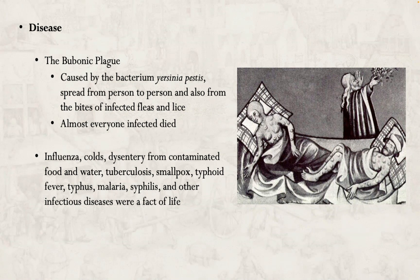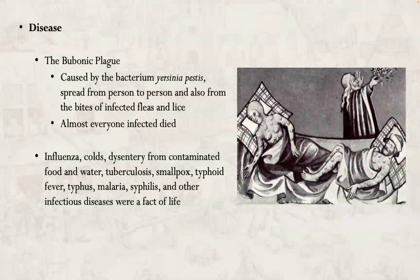Disease was a fact of everyday life in Elizabethan England. Of course there was still the bubonic plague, caused by the bacterium Yersinia pestis — they didn't know that at the time, but we know it today. It was spread from person to person and could also be spread through the bites of infected fleas and lice. There has been some recent research suggesting that rats were not as involved as initially thought, though the common belief was that rats carried the fleas, the fleas bit the rats, and then the fleas bit the people.